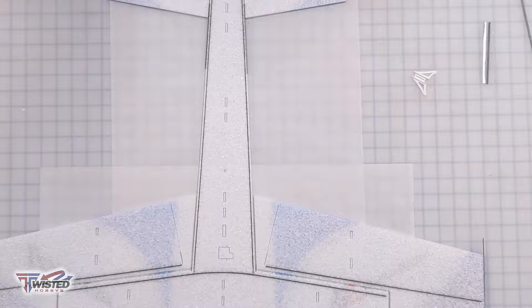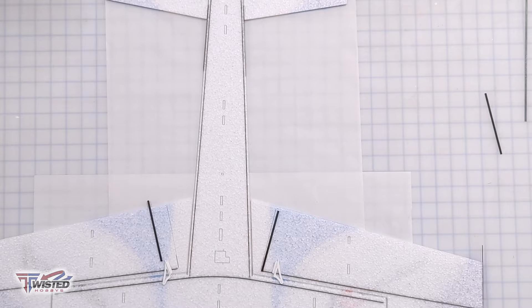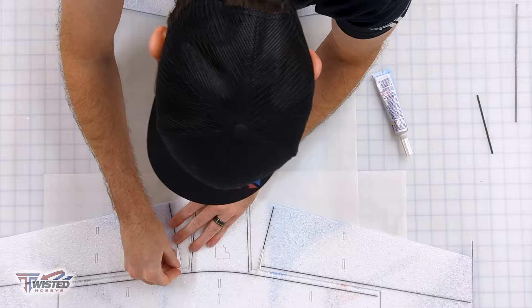Next I'm heading to the hardware bag for the aileron stiffeners and the control horns for those. So again, dry fit, trim, and then glue into place. Make sure your holes for your control horns are over your hinge line.